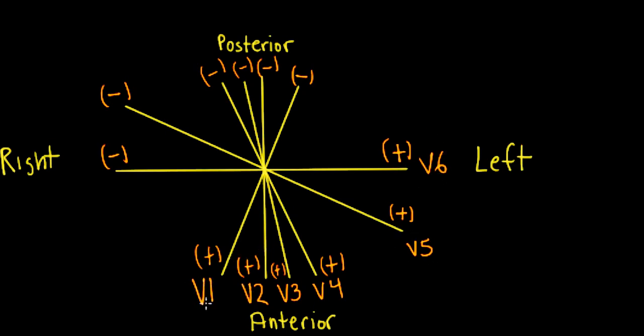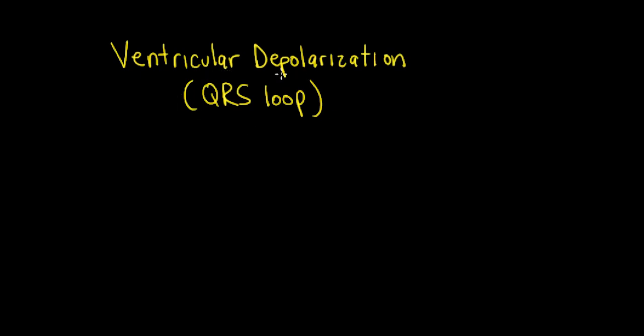So now we're going to look at the ventricular depolarization process that generates our QRS complex. And this will be the basis of our QRS vector cardiogram loop. We're going to have the main vector forces divided into two major forces, the interventricular septum forces, and the ventricular free wall forces.